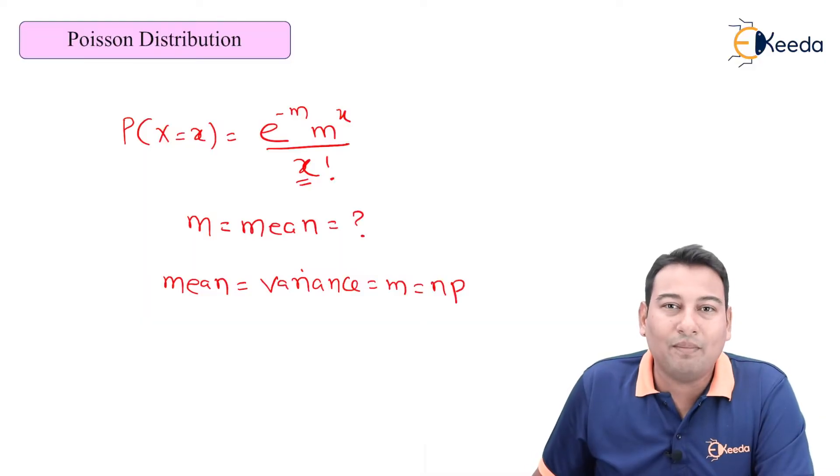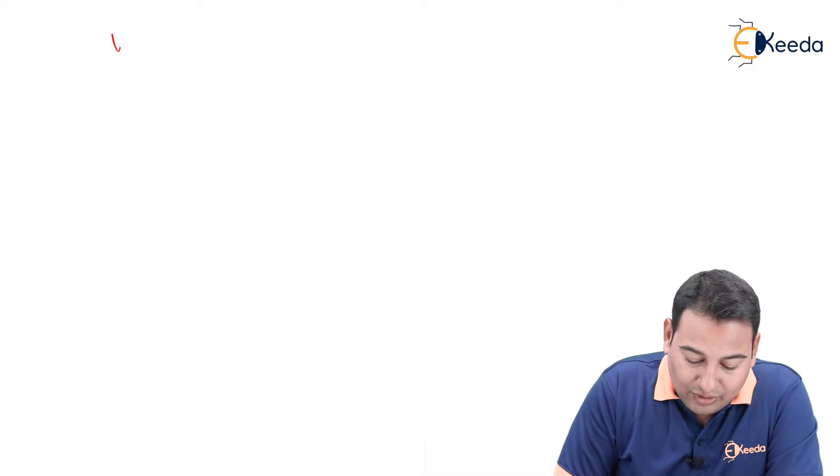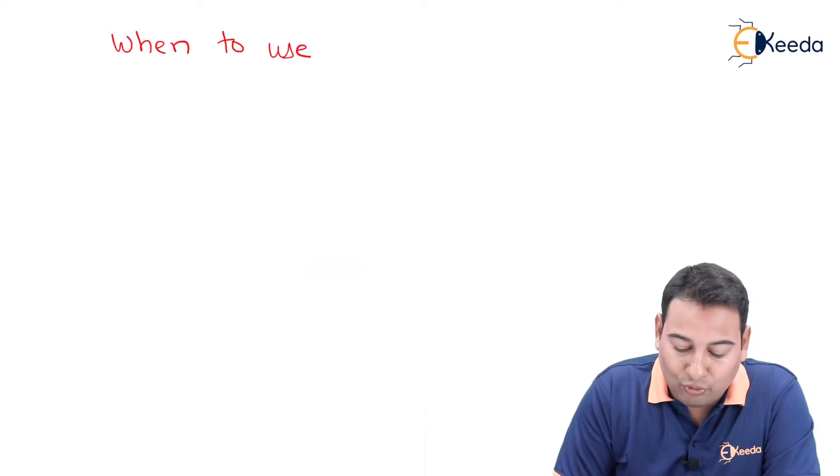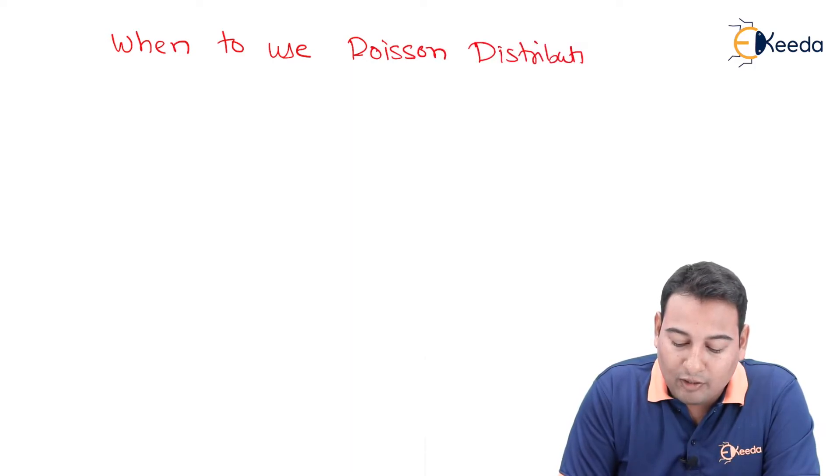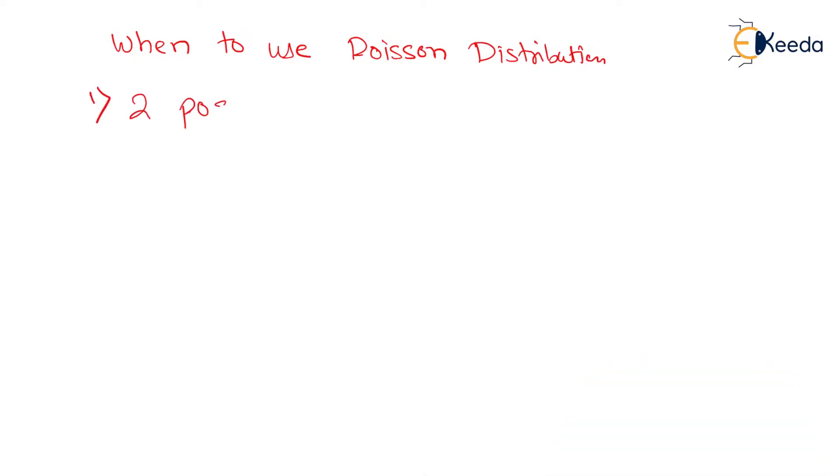Let's discuss when to use Poisson distribution. The conditions are exactly opposite to binomial distribution. First point is the same: there are only two possibilities - success and failure.